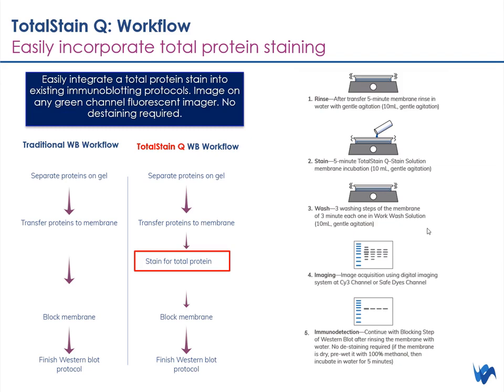The good news is that incorporating a total protein stain into your western blotting workflow is very simple. Total Stain Q adds just a simple staining step after transfer and before blocking of your membrane. There are no special gels required and no special sample treatments prior to running your gel. After transferring your proteins to your membrane, you stain your membrane, image using the green channel or the safe stain channel of any fluorescent imager, and then continue on to your blocking step. There's no need to de-stain and it's compatible with both fluorescence and chemiluminescent western blotting protocols.